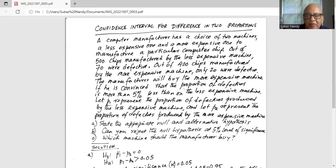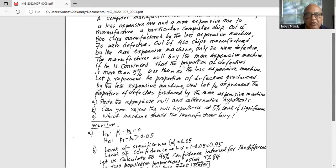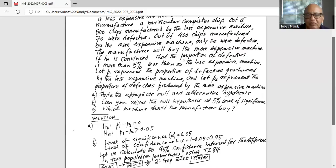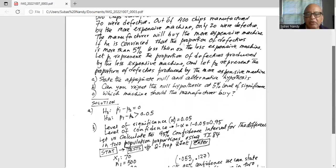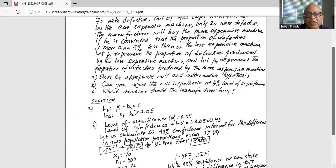State the null and the alternate hypothesis. Can you reject the null hypothesis at 5% level of significance? Which machine should the manufacturer buy? So the null hypothesis is P1 minus P2 equals 0. Alternate hypothesis is P1 minus P2 greater than 0.05. My level of significance alpha is 0.05. Hence, my level of confidence is 1 minus alpha, which is 1 minus 0.05 or 0.95.